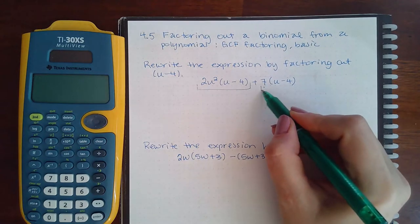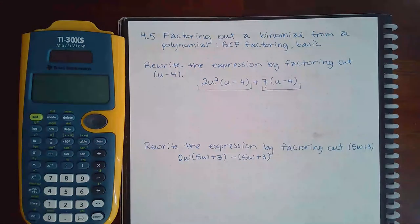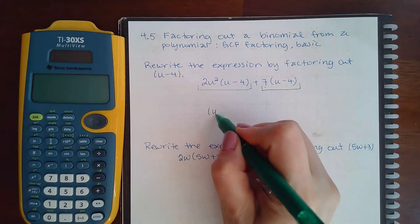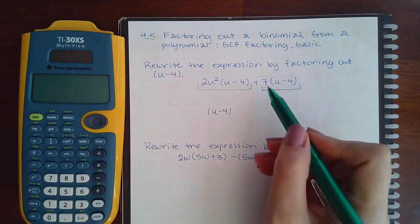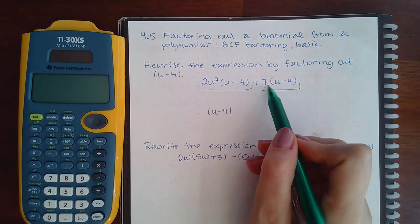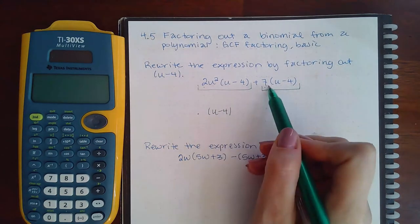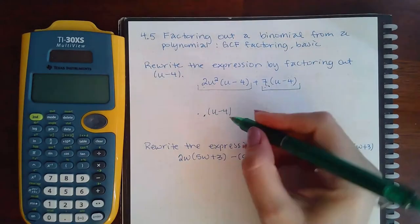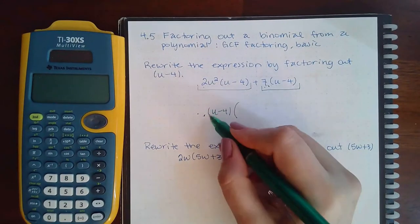Which means that this entire thing is a term. So there are two terms in this problem. What does each term have in common? They definitely have the (u-4) in common, but 7 and 2 do not have a number in common. And there are no u squareds here or any u's at all, so they don't have a variable, a single variable in common.